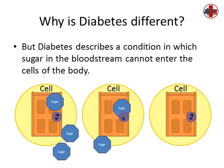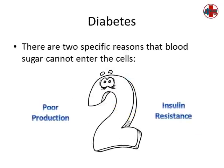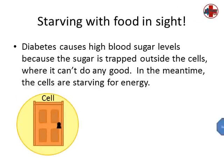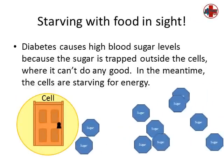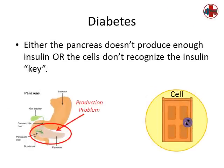But diabetes describes a condition in which the sugar in the bloodstream cannot enter the cells of the body. There are two specific reasons that blood sugar cannot enter the cells: poor production or insulin resistance. Diabetes causes high blood sugar levels because the sugar is trapped outside the cells where it can't do any good. In the meantime, the cells are starving for energy. With diabetes, either the pancreas doesn't produce enough insulin, which is a production problem, or the cells don't recognize the insulin key, which is called insulin resistance.